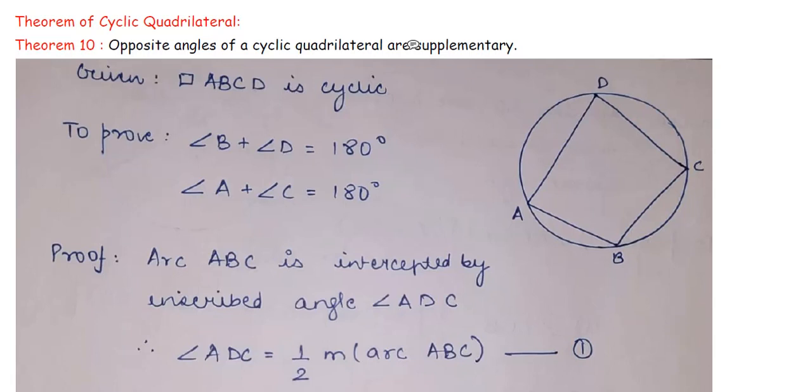What does this mean? Opposite angles, meaning angle A and angle C are supplementary. Supplementary angles are those whose sum is 180. Meaning angle A plus angle C is 180. Angle B plus angle D is 180. This is the property of a cyclic quadrilateral.